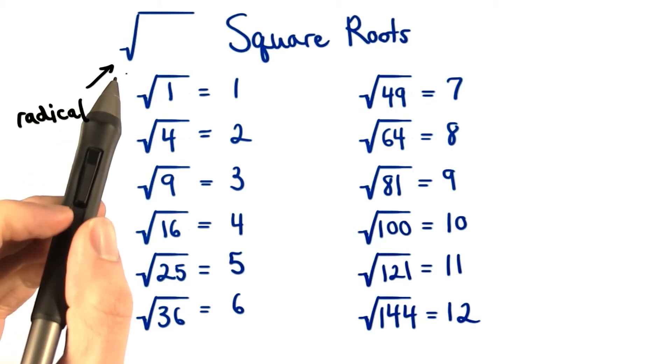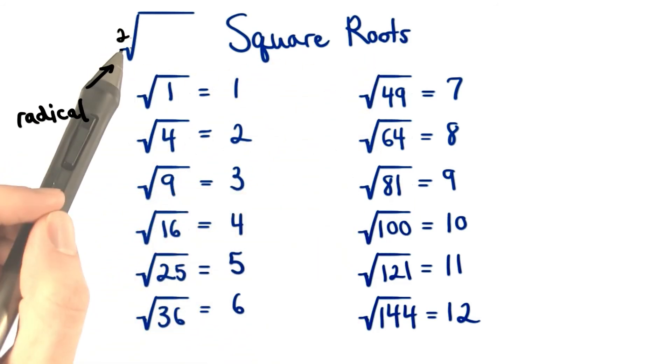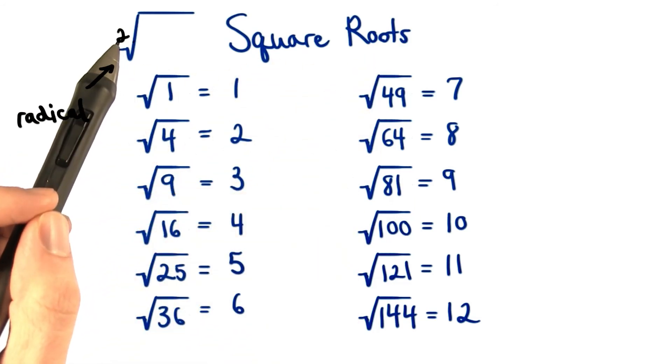Remember, this is the radical symbol, and in this case, the index is a 2, so we have a square root. We don't list the 2 for square roots, but we know it's there.